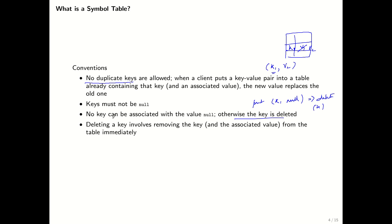To summarize the conventions: if a client calls put with a key that already exists, we overwrite the existing value. Keys can never be null. If put is called with a null value, we treat it as delete and remove the corresponding key. When delete is called with a key, we remove that key and associated value from the symbol table immediately.